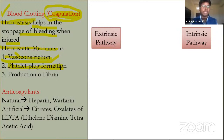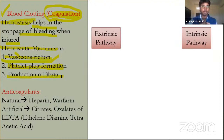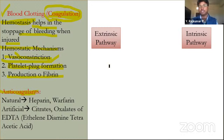The third process is the production of fibrin, a net-like structure formed over blood cells that stops bleeding. Fibrin formation is the actual mechanism of blood coagulation. There are two pathways: the extrinsic pathway and the intrinsic pathway.